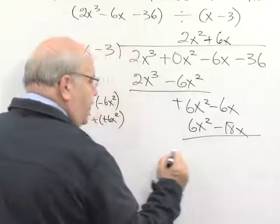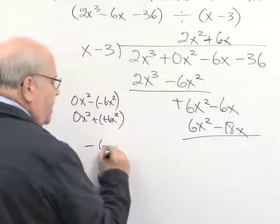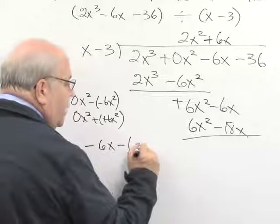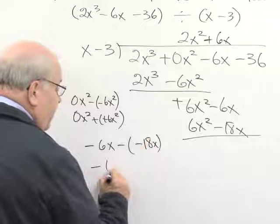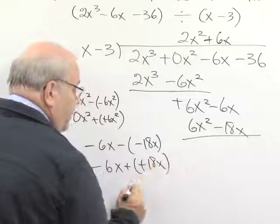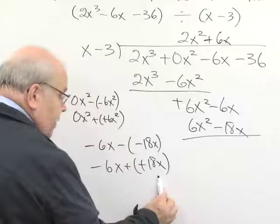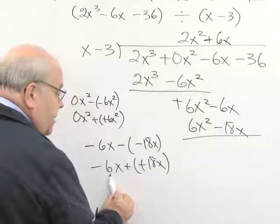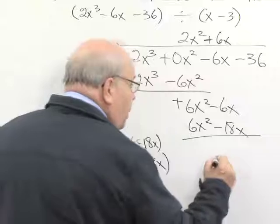Now I want to do my subtraction. 6x² - 6x² is 0, but this one is a little tricky. We have -6x subtract -18x. That's the same as -6x added to a positive 18x. Now when we add positive 18x and -6x, we see that we get positive 12x.